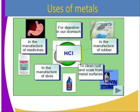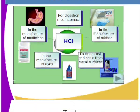From this chart, you can see some of the uses of acids. These include: hydrochloric acid for digestion in our stomach, manufacture of medicine, manufacture of dyes, removal of rust and scale from metals, and in the manufacture of rubber. Some of these acids can be used in various ways.